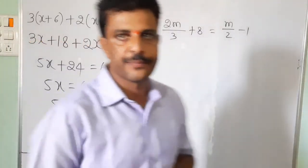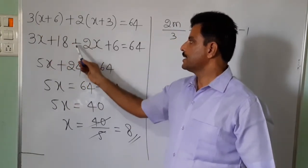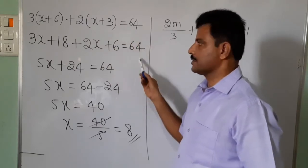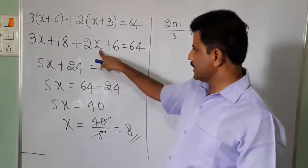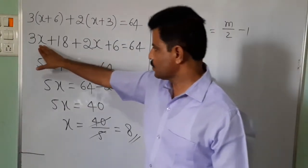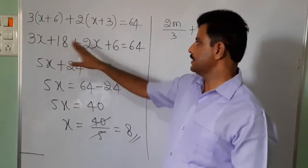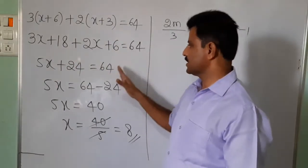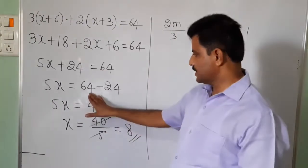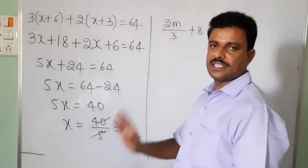Do you understand this one? It is very simple. We have 3 into x giving 3x plus 18, and 2 into x giving 2x plus 6, equals 64. Since x is the same variable, the coefficient of x is 3 plus 2 equals 5. So 5x plus 24 equals 64. Move 24 to the right side — plus changes to minus — so 5x equals 64 minus 24 equals 40. Therefore x equals 40 divided by 5, x equals 8.